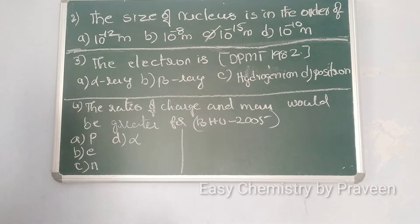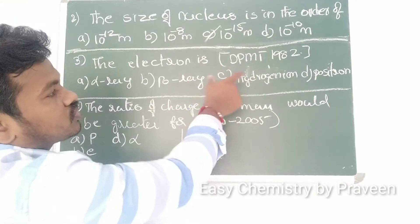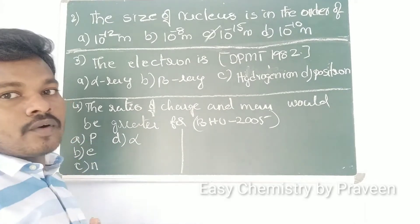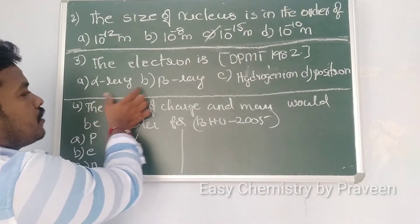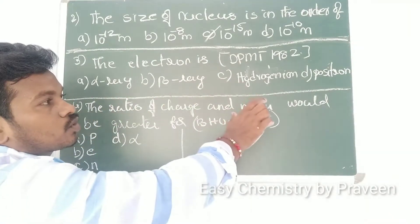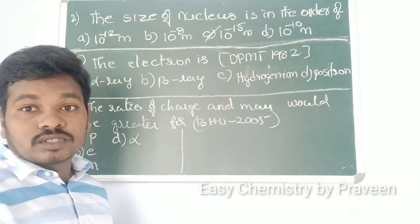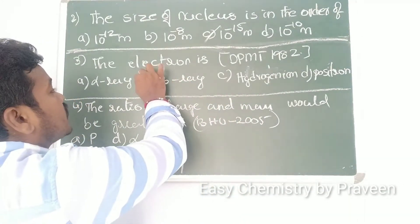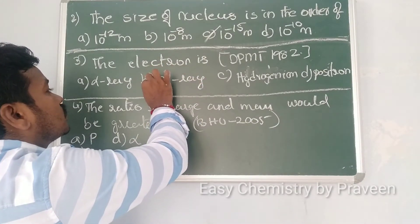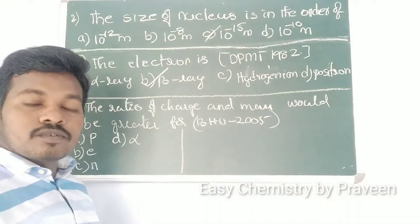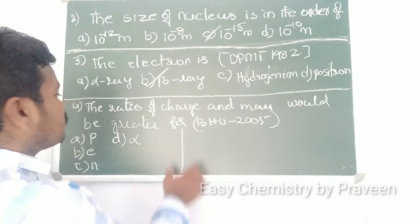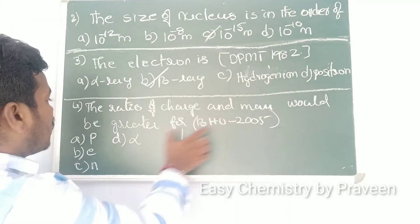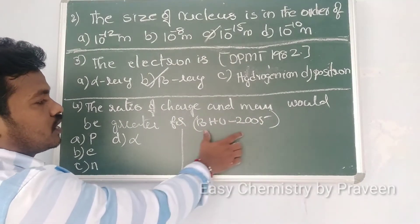This question was asked in DPMT 1982. The options given are alpha ray, beta ray, hydrogen ions, and positron. The electron is a high-energy beta particle — beta is nothing but a high-charged electron. So the correct option is beta rays.